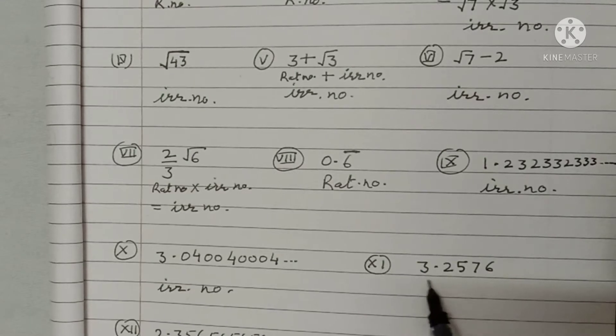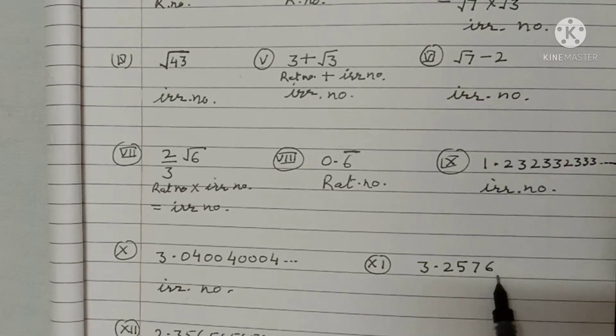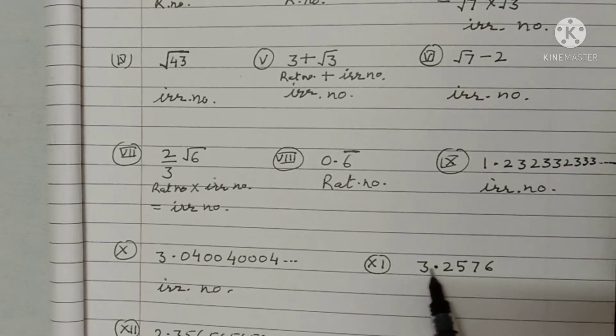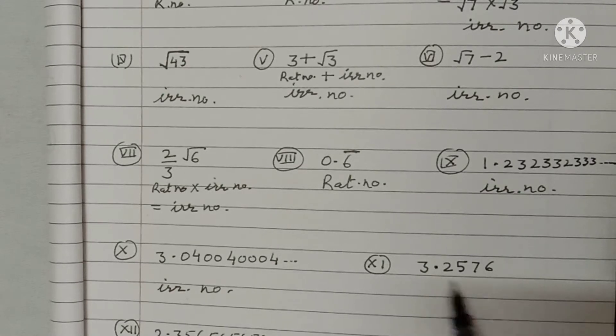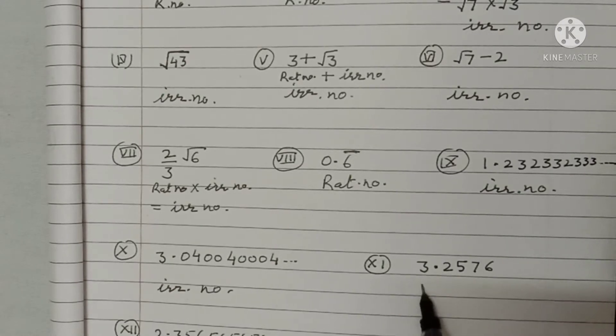Next, 3.2576. This decimal number comes to an end, so this is a rational number.